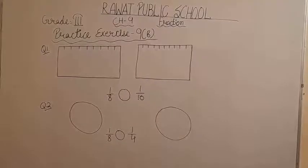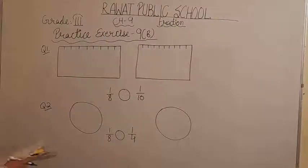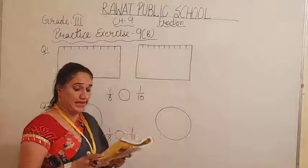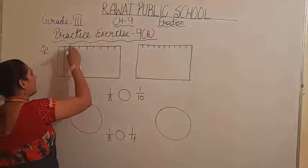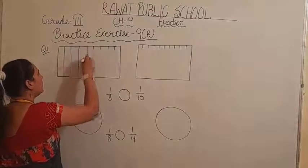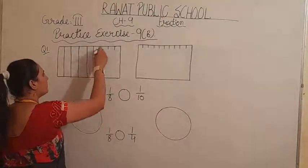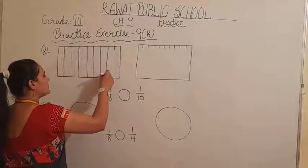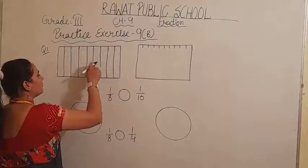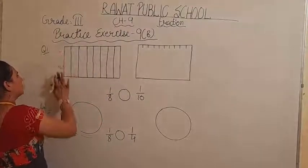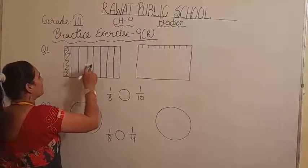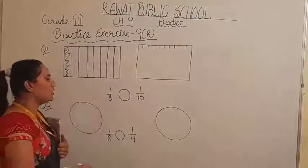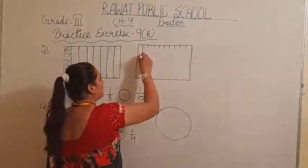In your book, practice exercise 9B, question 1 says: draw 2 identical rectangles — shade 1 by 8 of the first one. I have already drawn one rectangle here. Just divide it into 8 parts: 1, 2, 3, 4, 5, 6, 7, and 8. Now in this, 1 part is shaded, so we will shade 1 part and write 1 by 8 here.